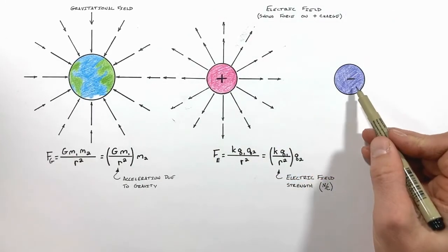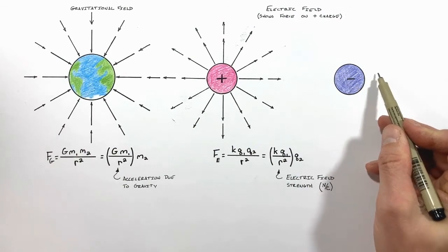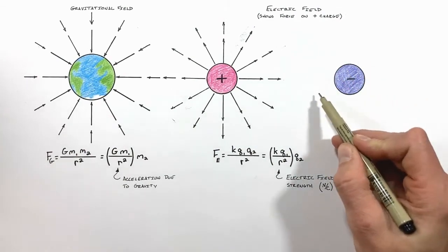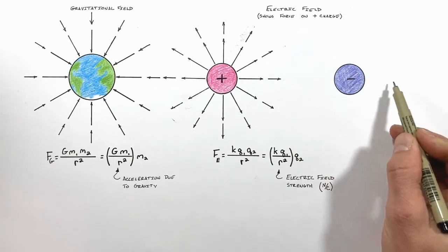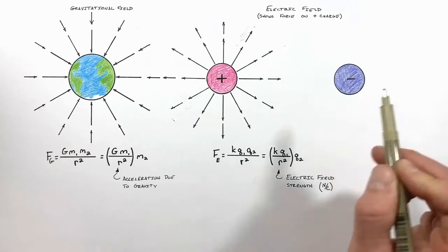The convention holds true when we show the electric field around this negative charge as well. If we were to place a positive test charge anywhere around this central charge, it would be drawn inward toward the central negative charge, so we show the arrows as acting inward.